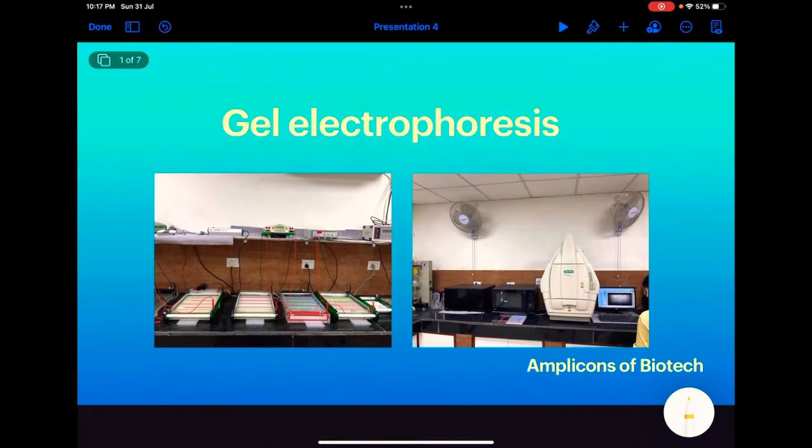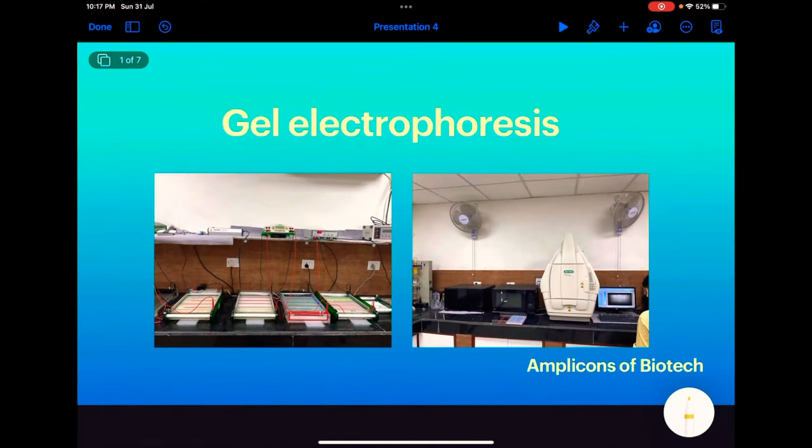If you are still watching the video, you might be familiar with these pictures: gel electrophoresis unit and gel documentation system. Using these two instruments or electrophoresis technique, we can check our PCR results and other nucleic acids like DNA and RNA.